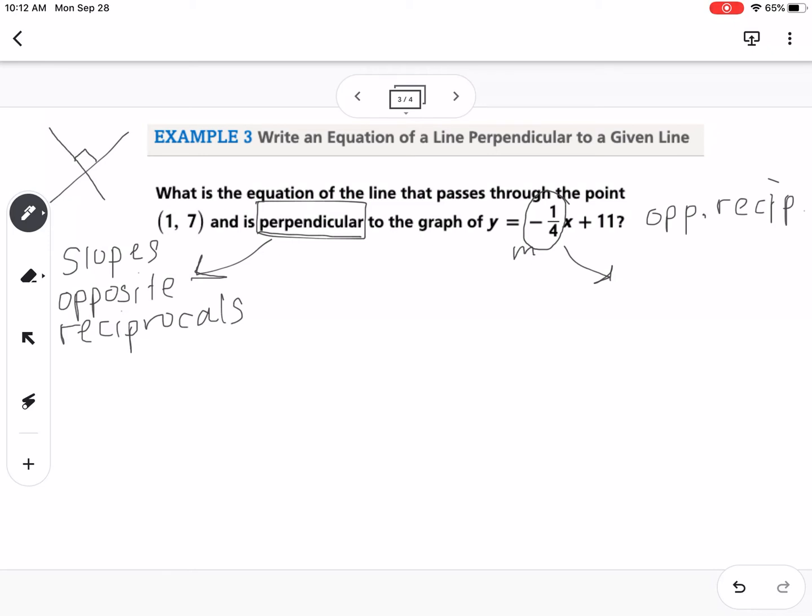So it's negative, so it's going to become positive, and then if I flip 1 over 4, it becomes positive 4 over 1. Well, we don't need to write the positive sign, and we don't need to write it as over 1. We could just write it as 4. So the slope I'm going to use is positive 4.